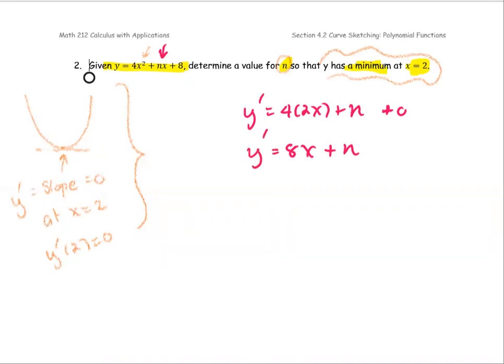And at the local minimum, the y prime is 0, and it occurs at x equals 2. Therefore, 8 multiplied by 2 plus n equals 0 will give you n equals negative 16.